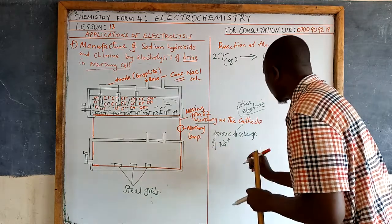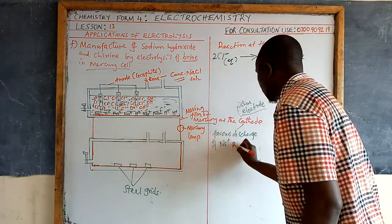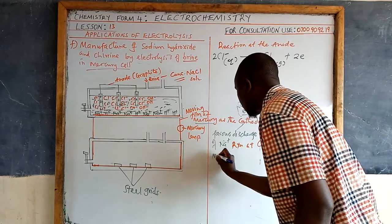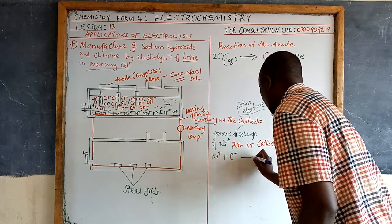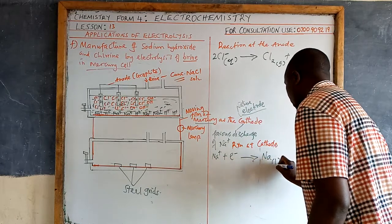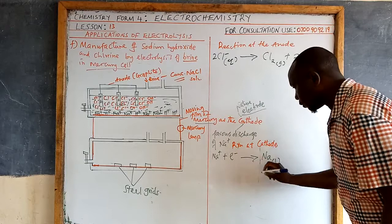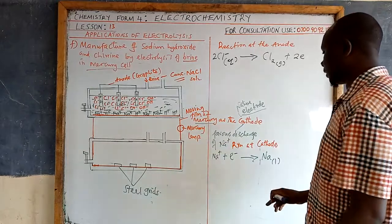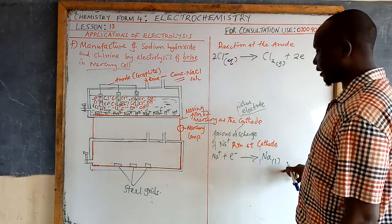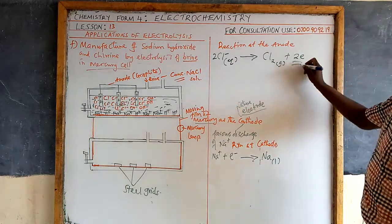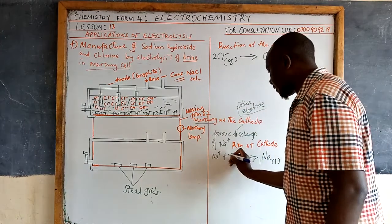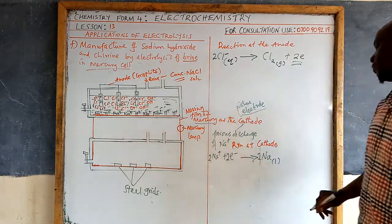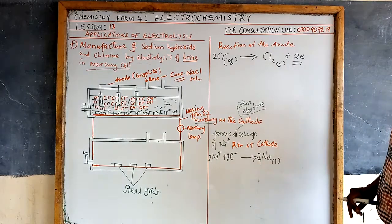The equation for the reaction at the cathode: sodium ions gain electrons and are discharged as liquid sodium — Na⁺ + e⁻ → Na(l). To balance electrons with the anode reaction (2 electrons lost), two moles of sodium ions gain two electrons, so two moles of liquid sodium are discharged: 2Na⁺ + 2e⁻ → 2Na(l).